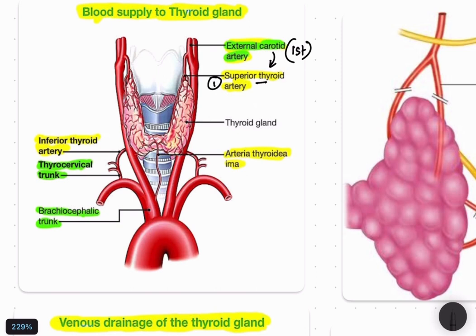The next artery is the inferior thyroid artery, which is not a branch of the external carotid artery. It is a branch of the thyrocervical trunk. The thyrocervical trunk is a branch of the subclavian artery.